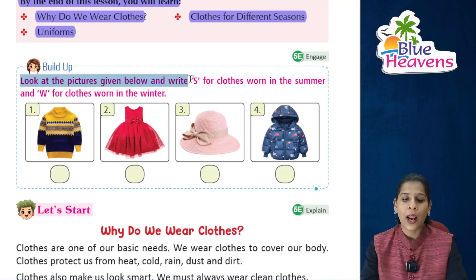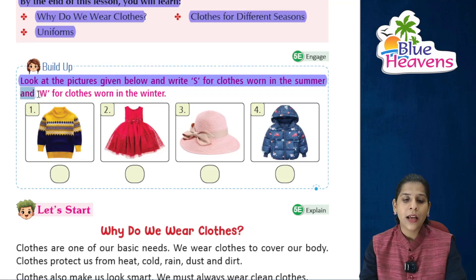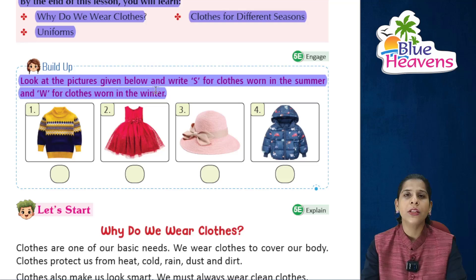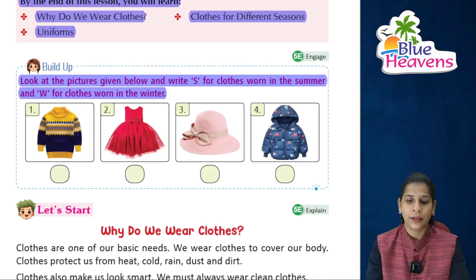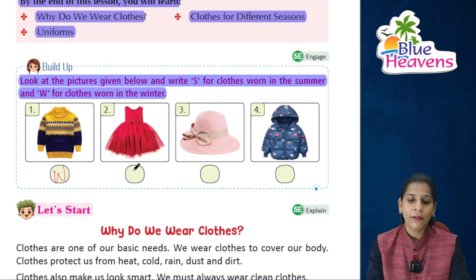Look at the pictures given below and write S for clothes worn in summer and W for clothes worn in winter. Let's do the activity: sweater — we wear in winter, so we write W. Frock — we wear in summer, so we write S. Hat — also worn in summer. Jacket — we wear in winter.